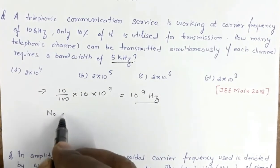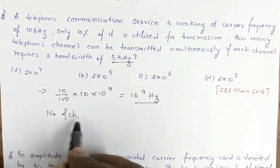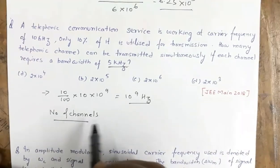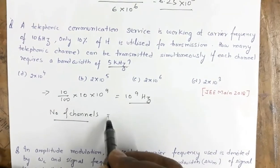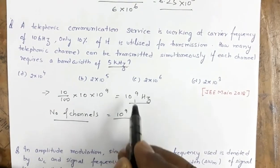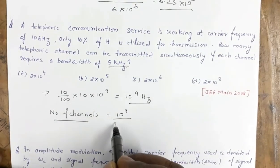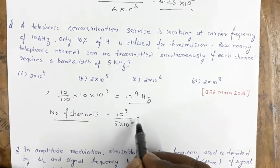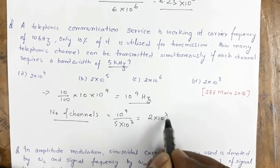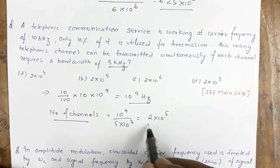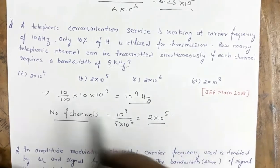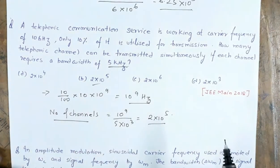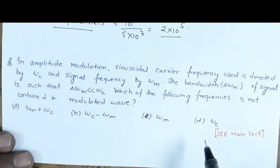The number of channels equals 10⁹ divided by 5 kHz, which is 5×10³. That gives 2×10⁵. From the available options, option B is the correct answer.